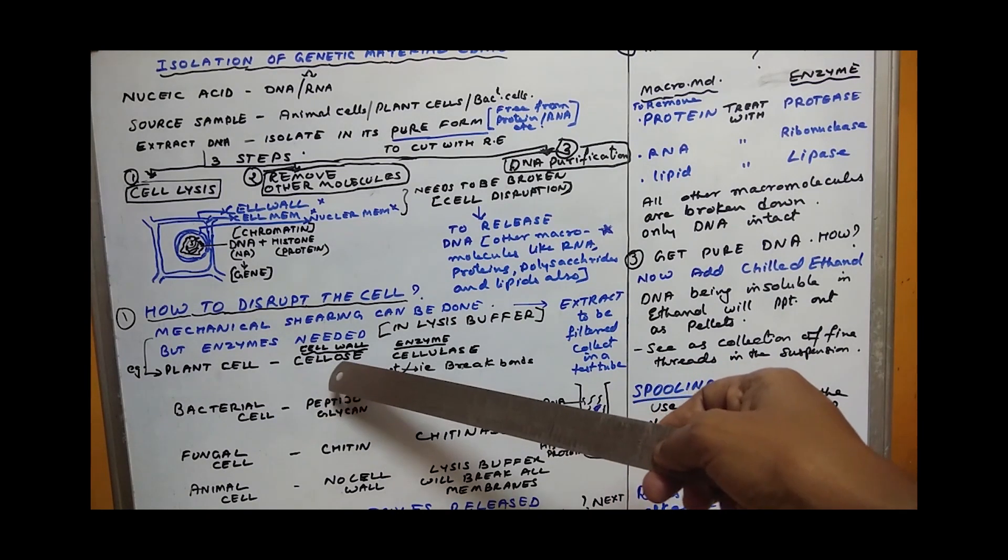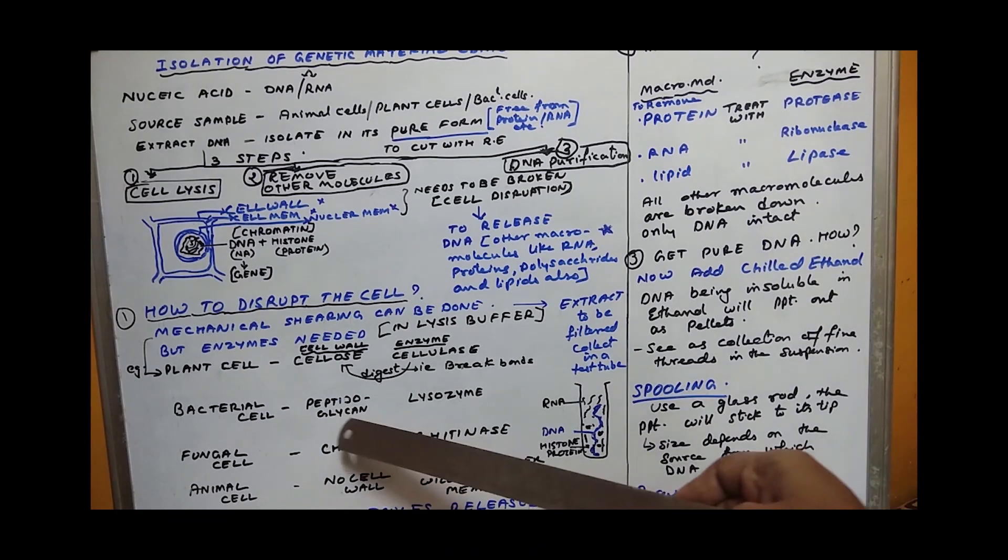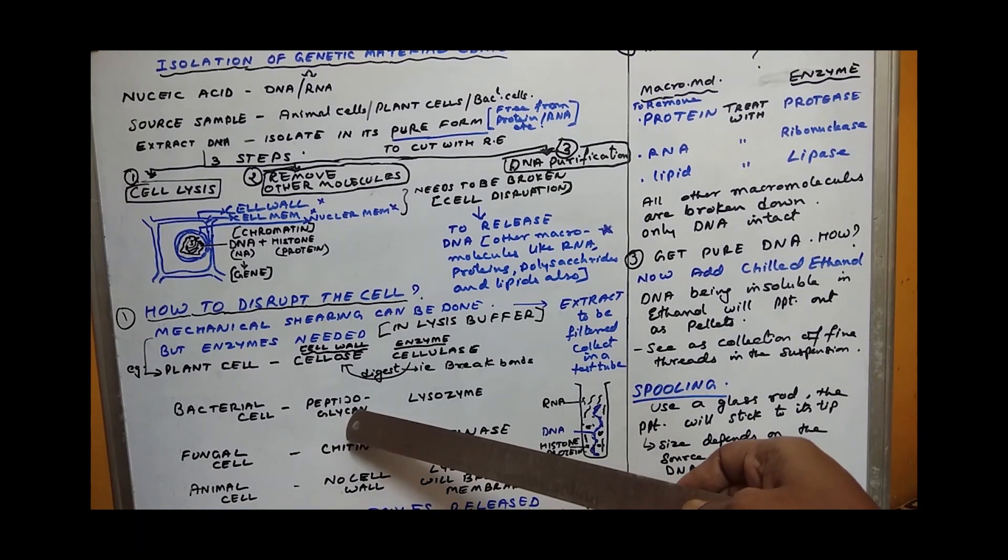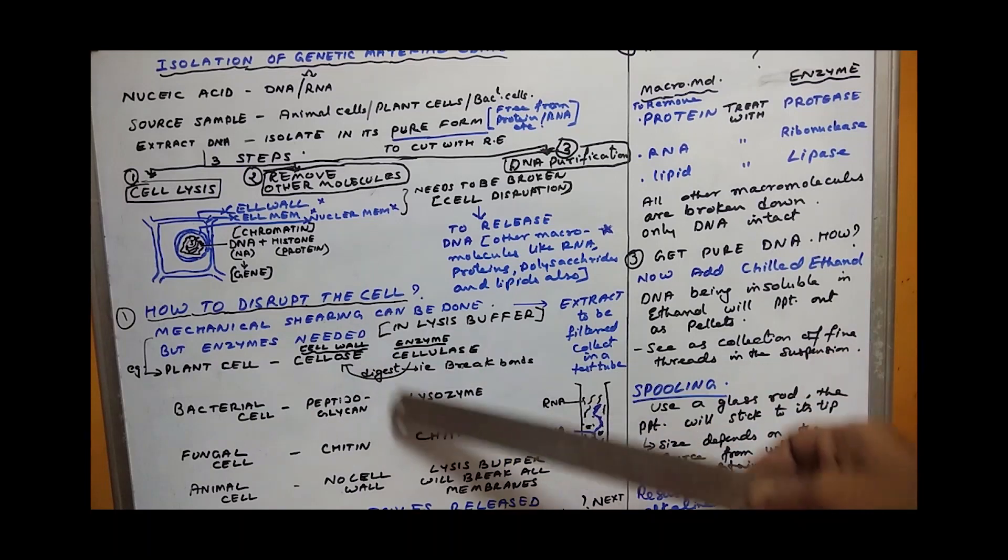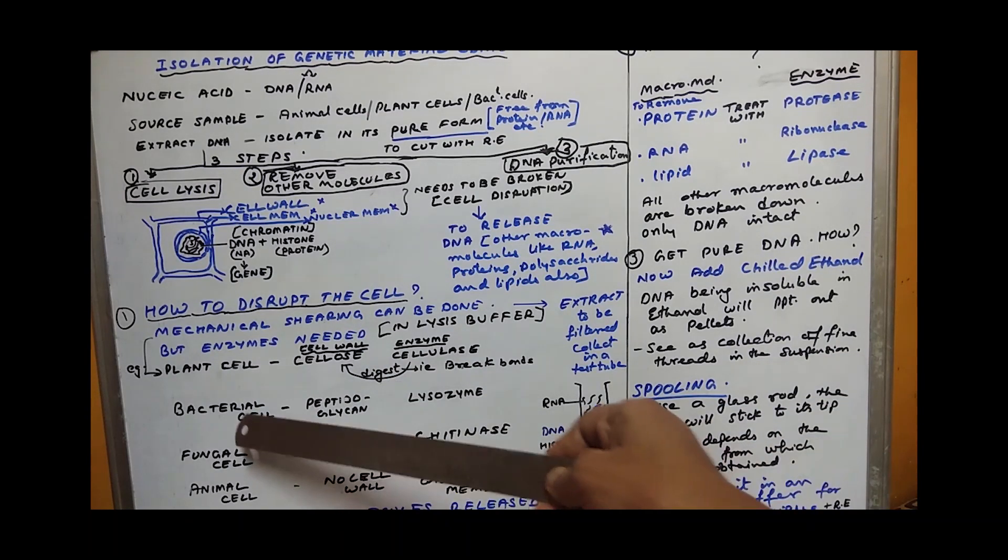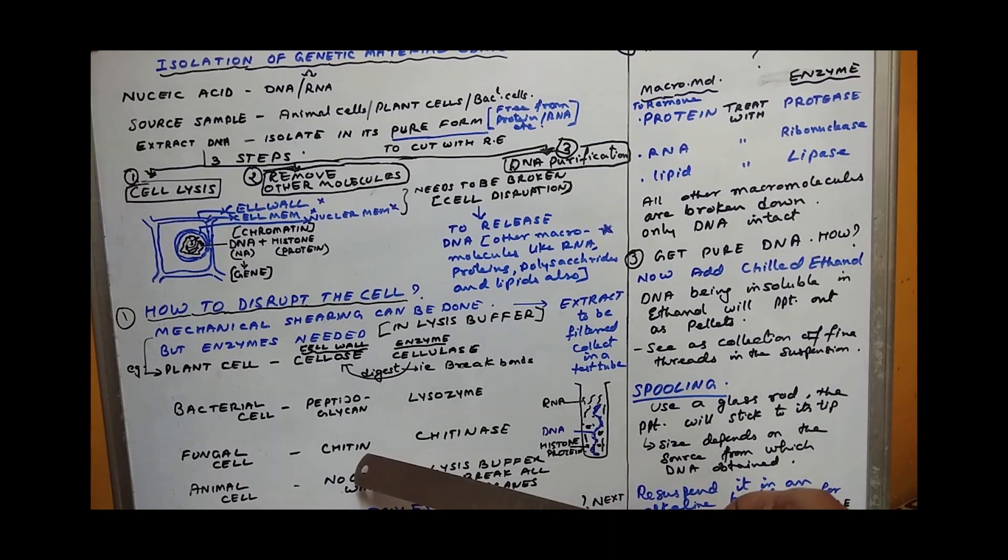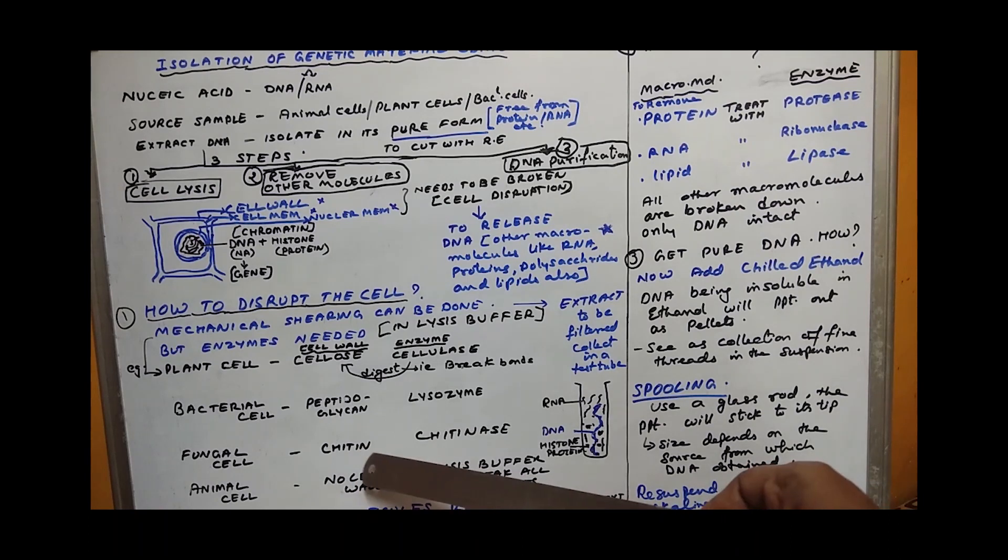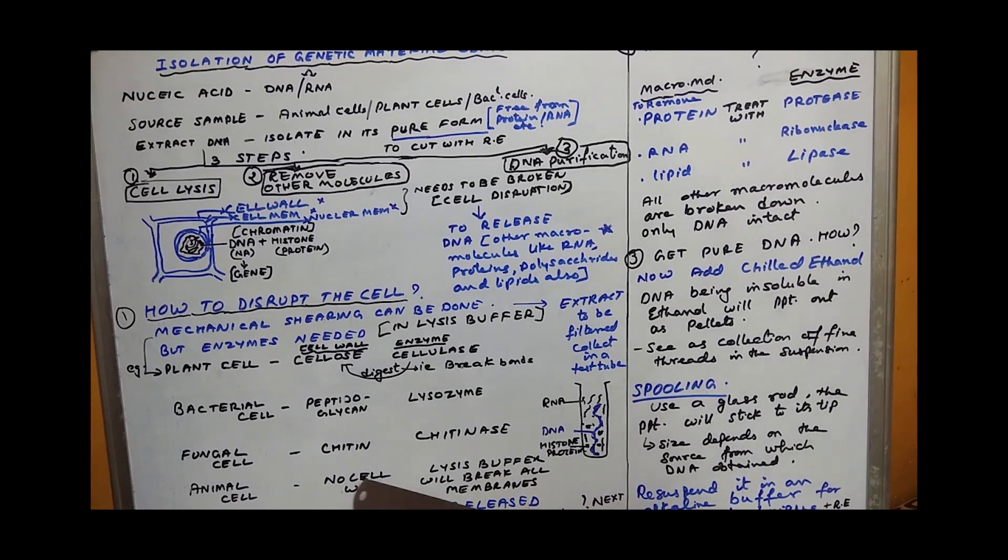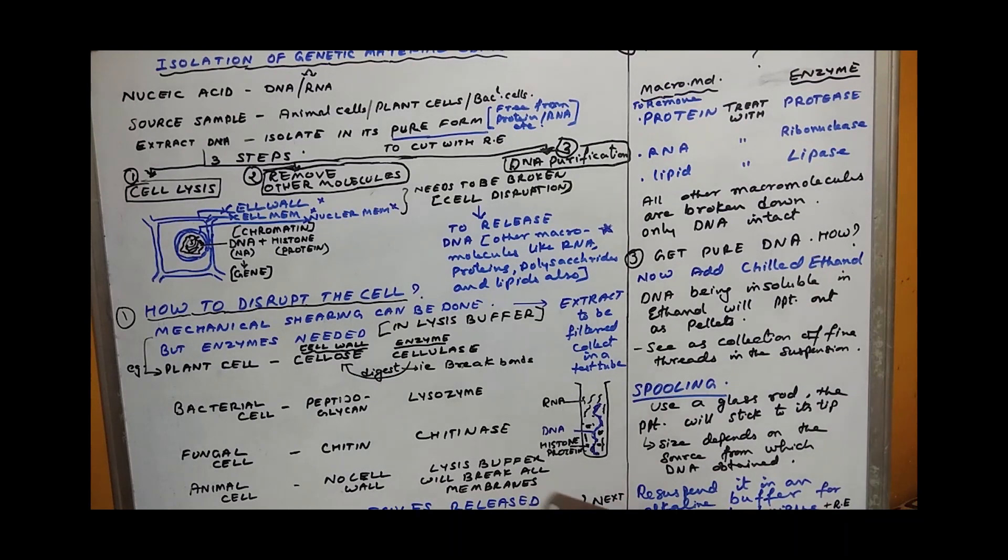If you are using bacterial cell, bacterial cell wall contains peptidoglycan, so the enzyme used is lysozyme. Fungal cells contain cell wall as chitin, so chitinase should be used. Animal cell has no cell wall, but lysis buffer will break the membranes. In all these cases, enzymes will break the cell membrane plus nuclear membrane so genetic material and other molecules will come out.